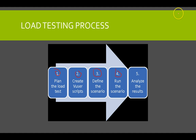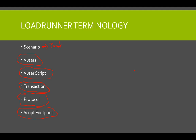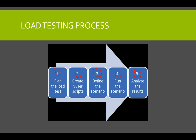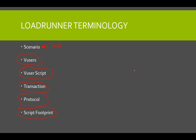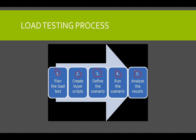So we have five steps defining how we run the whole load testing process, and we'll use those steps in LoadRunner to get what we want. In the following video, we're going to start with the HP Web Tours, where we'll create a web server sample and begin the whole process. To recap: we covered components — Virtual User Generator, Controller, Analyst, and Load Generators — and terminology — scenarios, VUsers, VUser scripts, transactions, protocols, and script footprint — plus the five-step process. That was LoadRunner components.